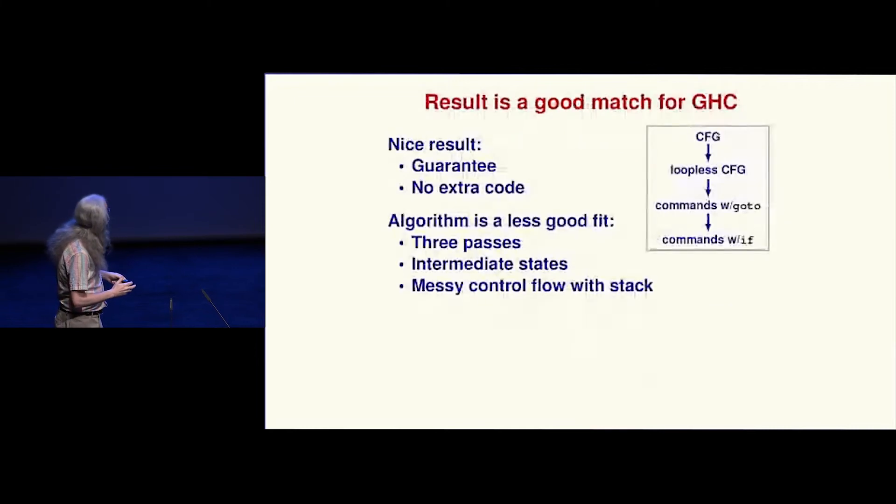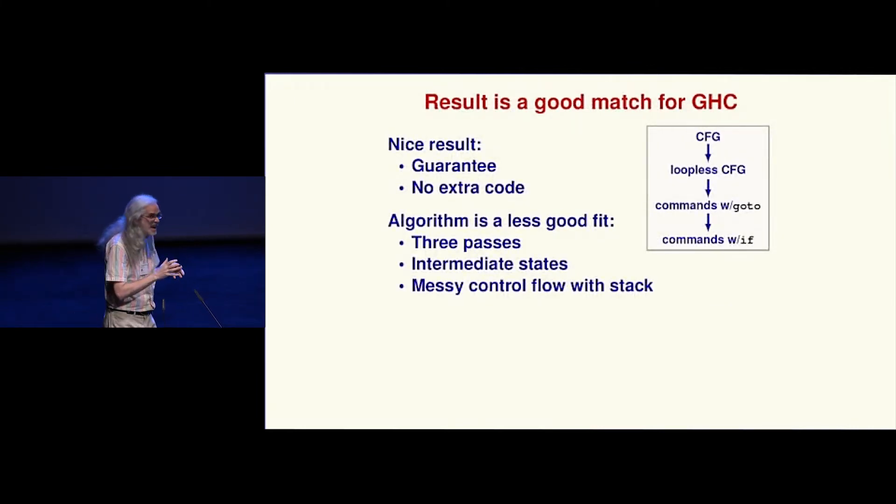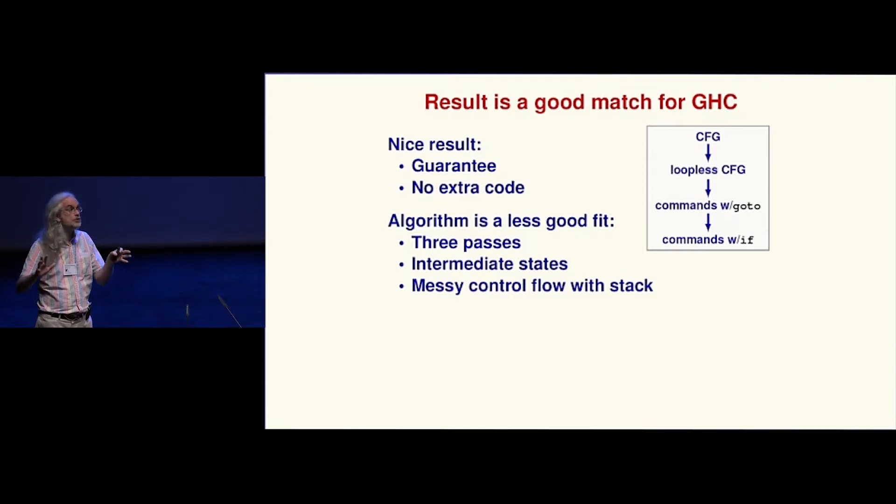It's this rather elaborate sequence of steps that start out with a reducible control flow graph—that's just one where you don't jump into the middle of any loops. Jumping out is okay, jumping in not okay. Then we have a sequence of things that eventually arrives at the structured flow that we want. But this was not something I was keen to add directly to GHC.